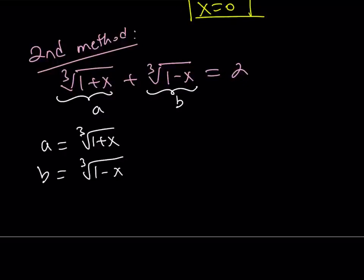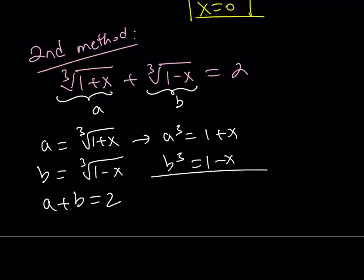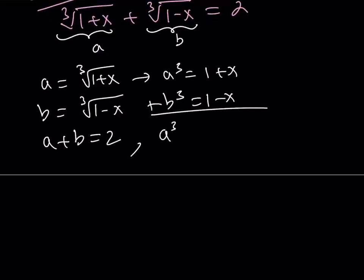So, from here, we get A plus B equals 2, right? Cool. But not only that, if you cube both of these numbers, A cube becomes 1 plus x, and B cube becomes 1 minus x. And when you add those two equations, you get A cubed plus B cubed equals 2. Because the x cancels out. Awesome.